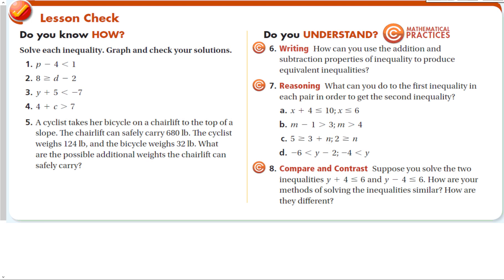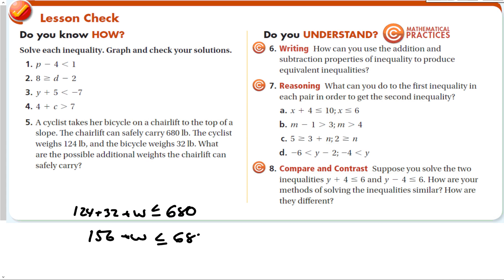Let's take a look at our quick lesson check. Solve each inequality — we would add 4 to both sides, add 2 to both sides, subtract 5, subtract 4. For the word problem: a cyclist takes her bicycle on a chairlift with a safe capacity of 680 pounds. The cyclist weighs 124 pounds and the bicycle weighs 32 pounds. We want 124 plus 32 plus extra weight w to be less than or equal to 680. Adding those together and subtracting 156 from both sides gives w is less than or equal to 524.